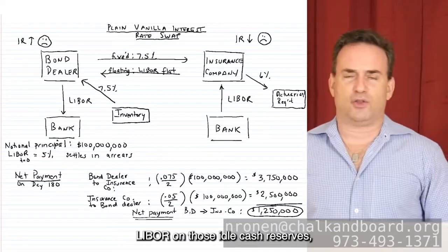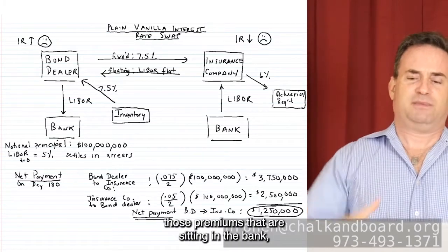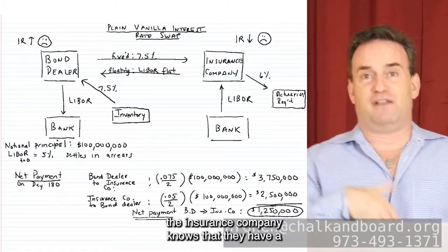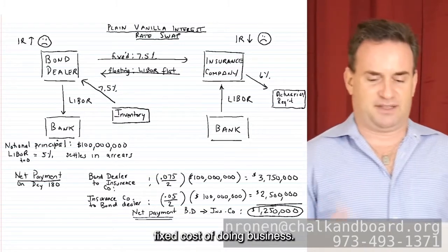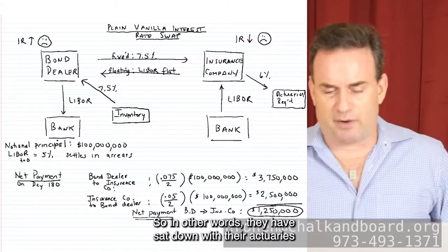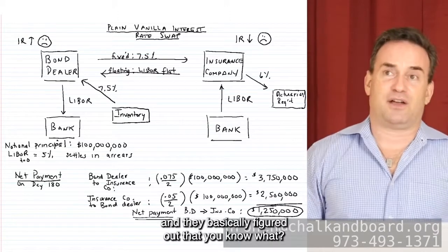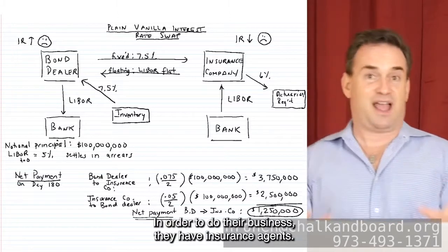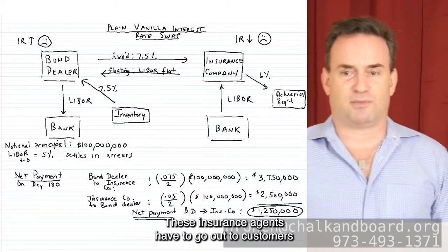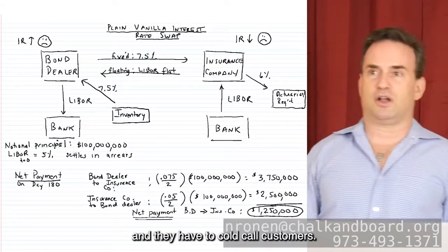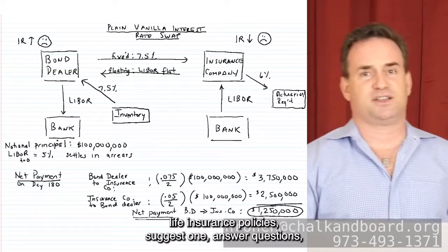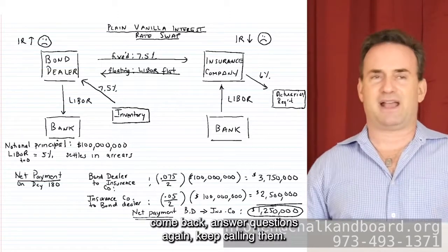Even though they're earning LIBOR on those idle cash reserves — those premiums in the bank — the insurance company knows they have a fixed cost of doing business. They've sat down with their actuaries and figured out that in order to do their business — insurance agents have to go out to customers, cold call them, sit down, show different types of life insurance policies, suggest one, answer questions, keep calling, bring the contract over, get them to sign — all this back and forth just to sell an insurance contract.